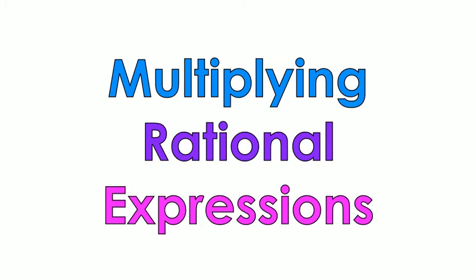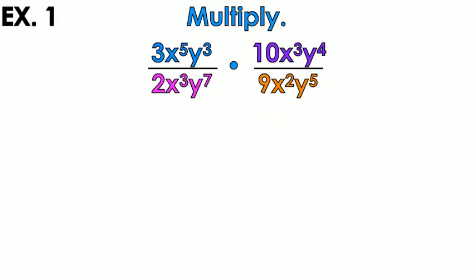All right, so we have to do some multiplying rational expressions today! This is example number one out of five examples. These are monomials — not just polynomials, but specifically monomials, which means there are no pluses and no minuses. Anytime there are no pluses or minuses in the numerators or denominators, we are dealing with monomials.